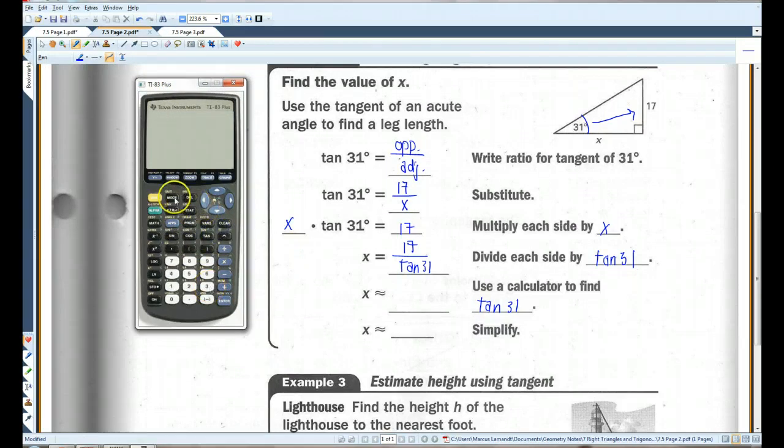Actually, let me make sure. Make sure it's in degrees. There we go. So, tangent of 31 degrees, 0.6009. Okay.